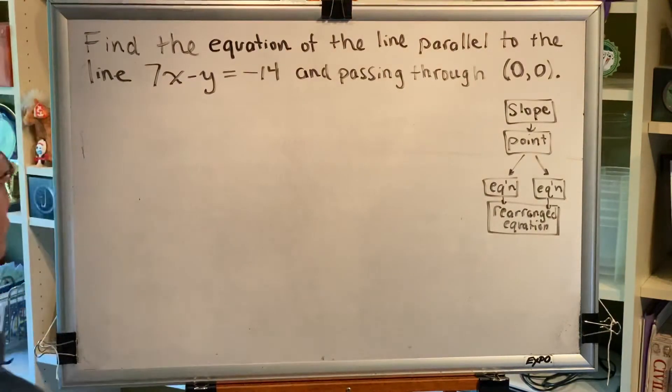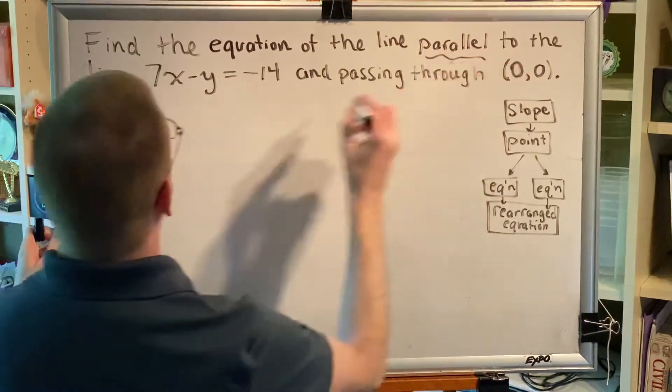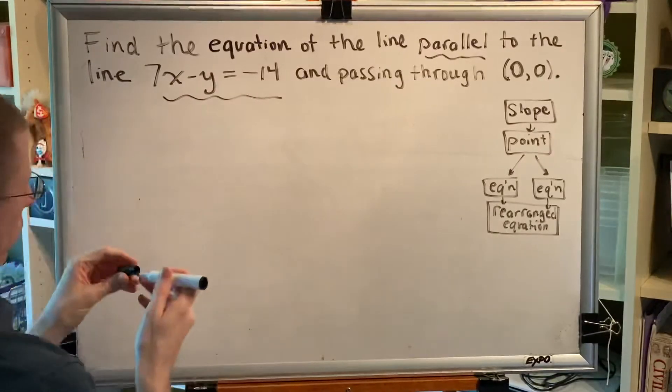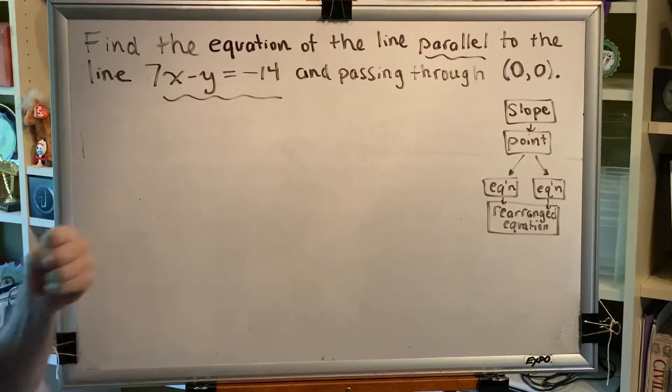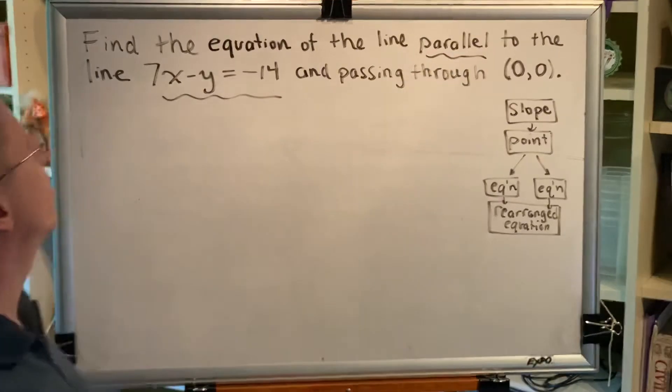In this problem it says parallel and this is our given line. So in order to determine the slope of our line, we need to determine the slope of the given line and then use the same slope because it says parallel.